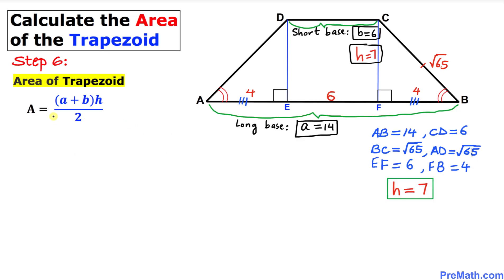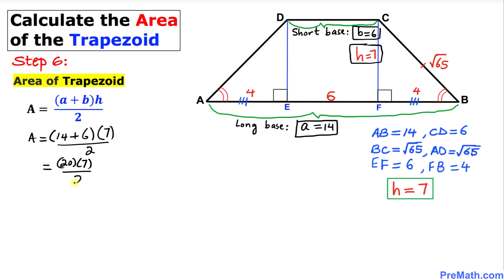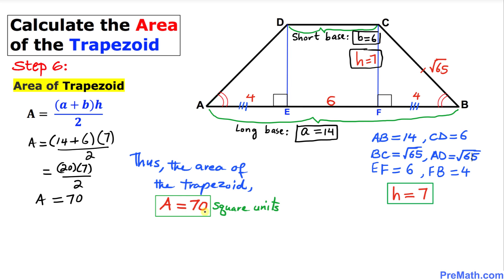Now for the final step: let's calculate the area of the trapezoid. A equals (a plus b) times H divided by 2. With a equal to 14, b equal to 6, and H equal to 7: A equals (14 plus 6) times 7 divided by 2, which equals 20 times 7 divided by 2, giving us A equals 70. Thus the area of the trapezoid is 70 square units.